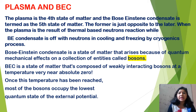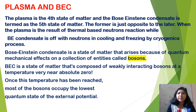Plasma is the 4th state of matter and Bose-Einstein Condensate is the 5th state of matter. The former is just opposite to the latter. Plasma is the result of a thermal high-energy reaction — it forms highly charged, ionized particles. Plasma consists of ionized, highly charged particles.